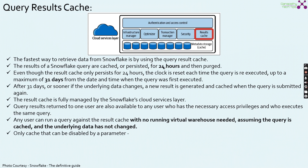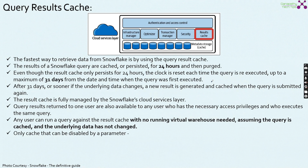The results of a Snowflake query are cached and persisted for 24 hours and then purged. Even though the results cache only persists for 24 hours, the clock is reset each time the query is re-executed, up to a maximum of 31 days from when the first query was executed. For example: fire a query now, it gets cached; if you don't fire the same query within 24 hours, it is purged. But if you fire the same query again within 24 hours, it persists for another 24 hours. This pattern rolls out for up to 31 days — only after 31 days from the first query submission will the results be purged.